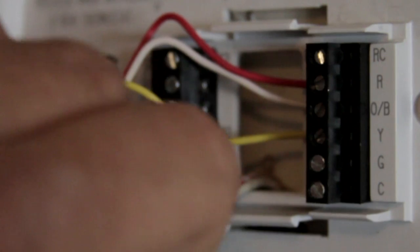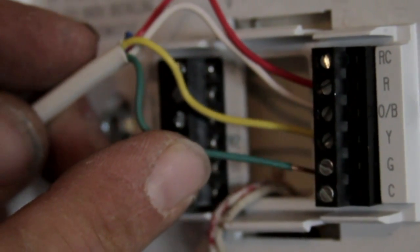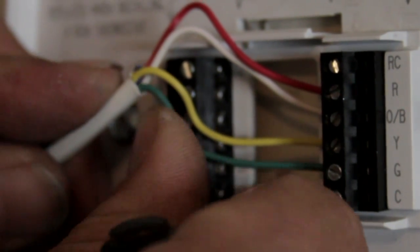Now if you ever want to have an option of being able to turn on a fan and you use the fan only option, that's going to go into G, and typically that wire is going to be green.